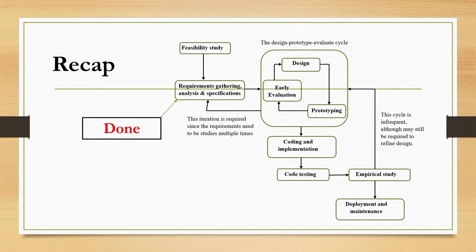In the earlier lectures, we have talked about the various stages of the life cycle in detail, including case studies on the outcome of those stages. These stages include requirement gathering, analysis and specification stage. The outcome of this stage is a Software Requirement Specification document, or SRS, which we have seen earlier in detail.